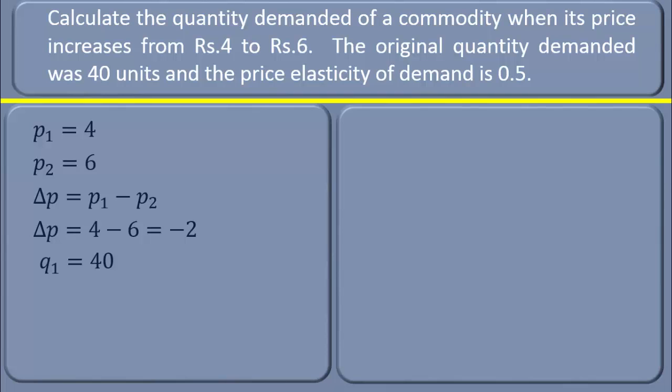Initial quantity q₁ = 40 units. New quantity we have to calculate. We shall have it as x. Change in quantity: initial quantity minus new quantity. Change in quantity Δq = 40 - x.